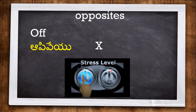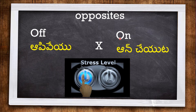We know switches which are in OFF position — off means stopped. The opposite of off is ON, meaning started. So putting something to ON means starting it, and putting something to OFF means stopping it.